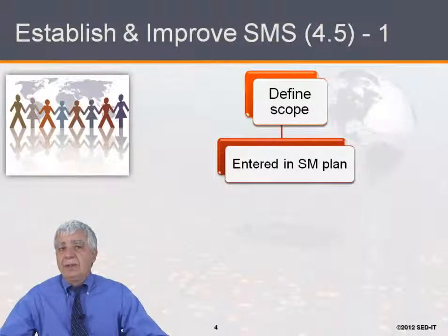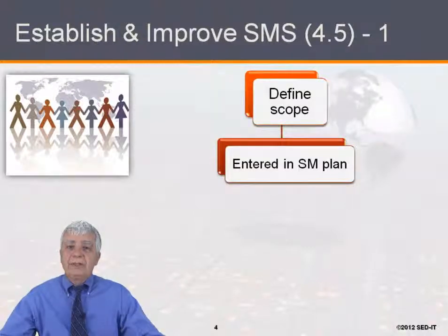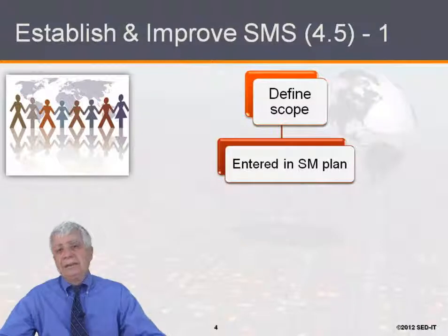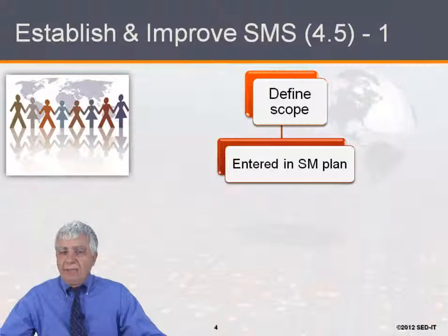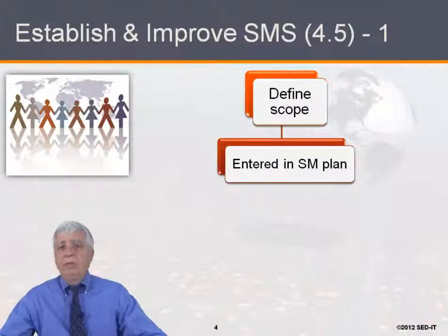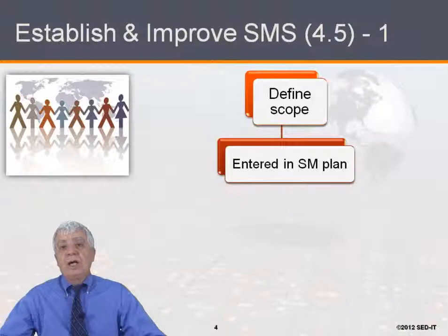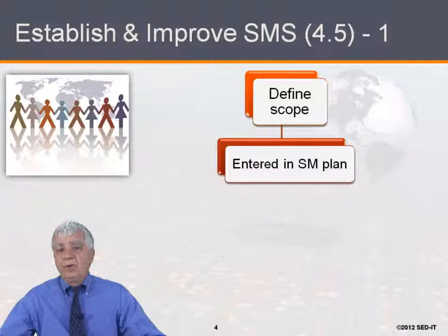The element of establish and improve in the standard says, first of all, you need to establish the quality management system, and you need to improve it. The first part is to define the scope. A scope is a simple sentence or a few sentences which is simple and clear, which defines what is going to be the area that you're going to provide services on.